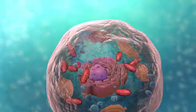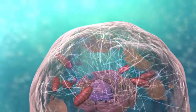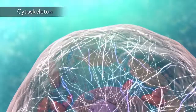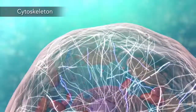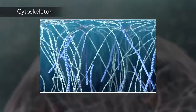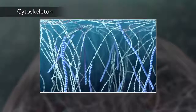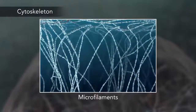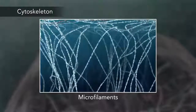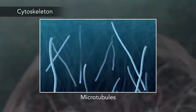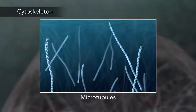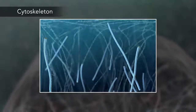Meanwhile, the cell maintains its shape through a cytoskeleton. The cytoskeleton includes the thread-like microfilaments, which are made of protein, and microtubules, which are thin, hollow tubes.